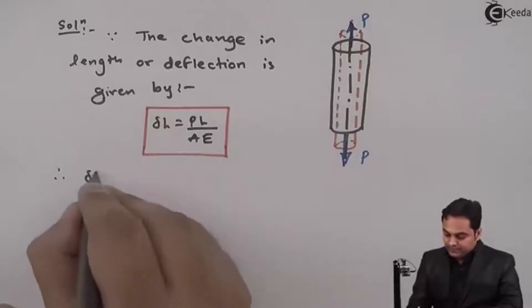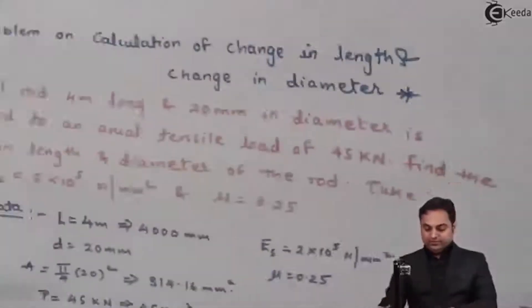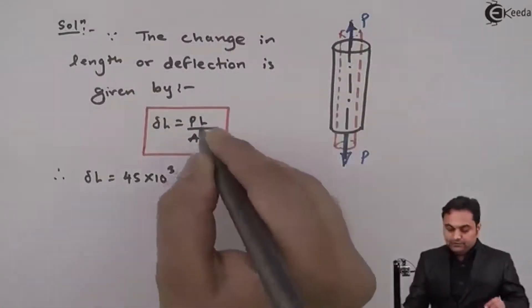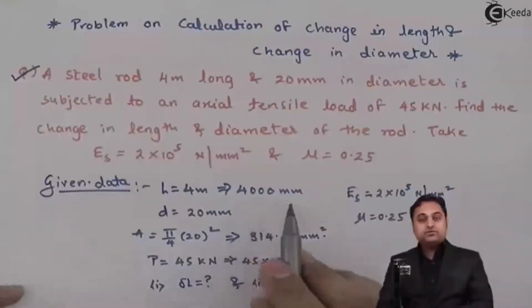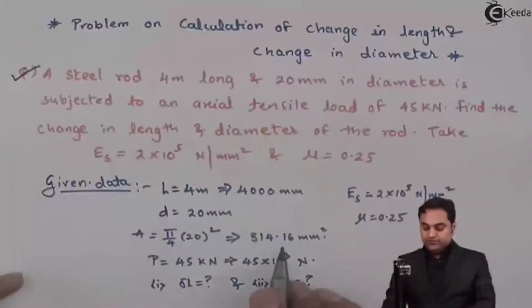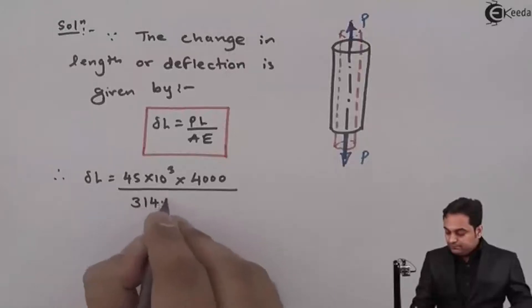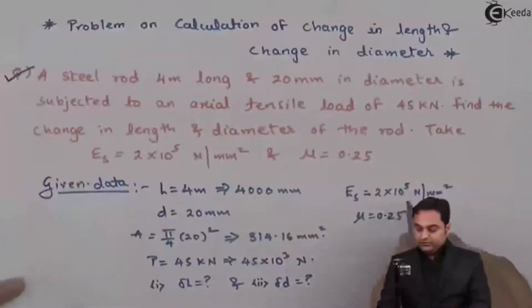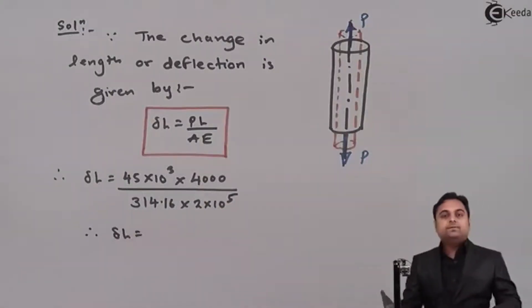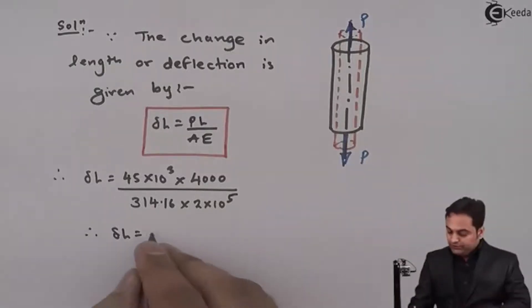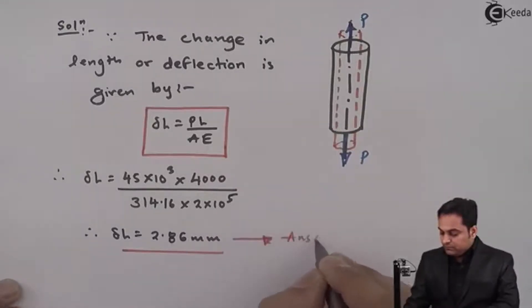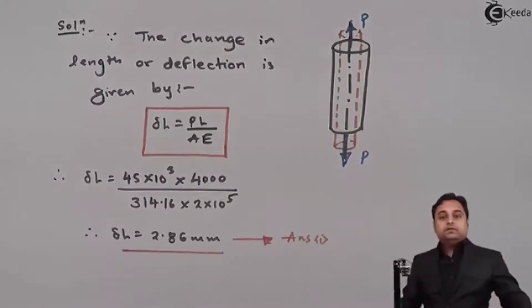So therefore ΔL will be equal to P, the value of load is given in the problem as 45 × 10³. Length of the rod is given, that is 4000 mm. Area we have found out, 314.16. And capital E Young's modulus 2 × 10⁵. So from this I will get the value of deflection which comes out to be 2.86 mm. This is the first answer.